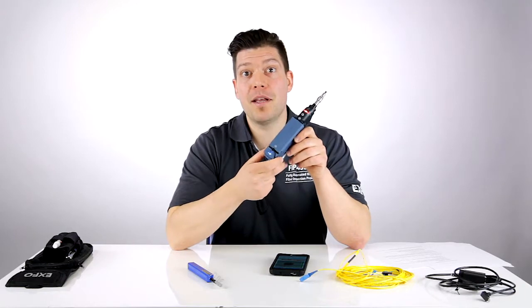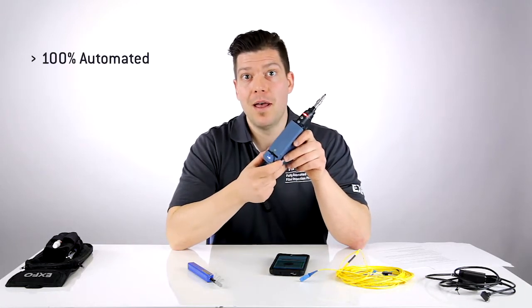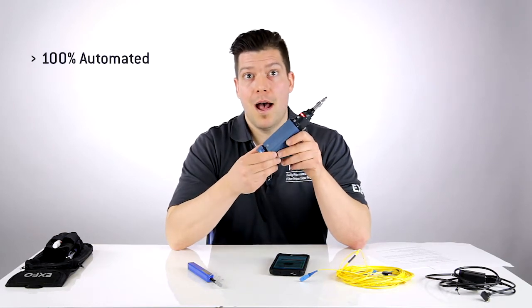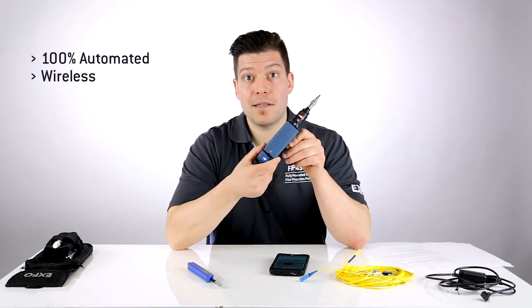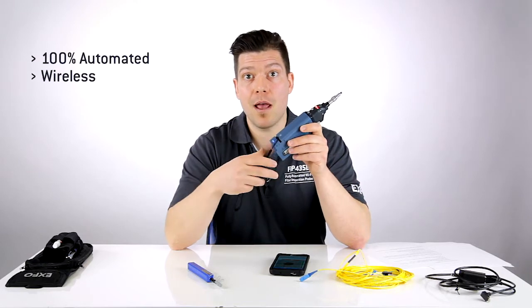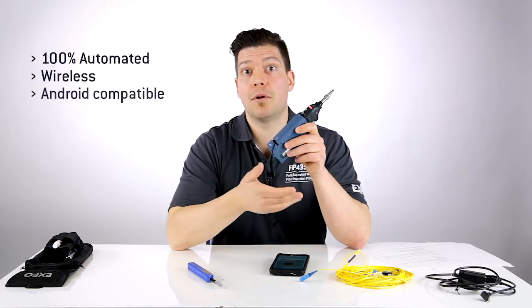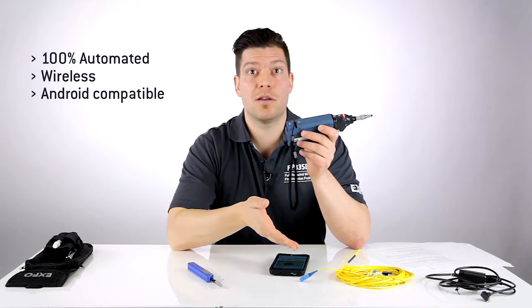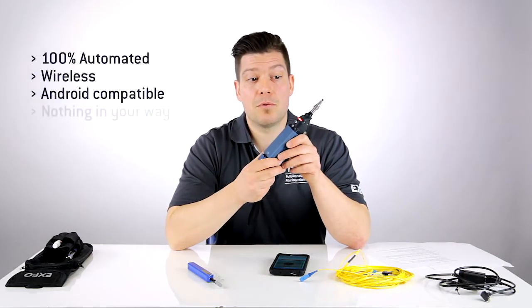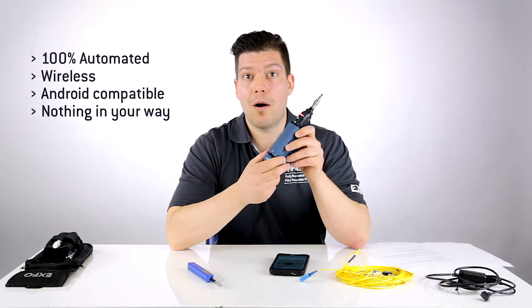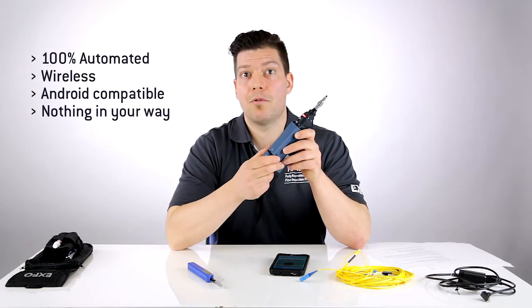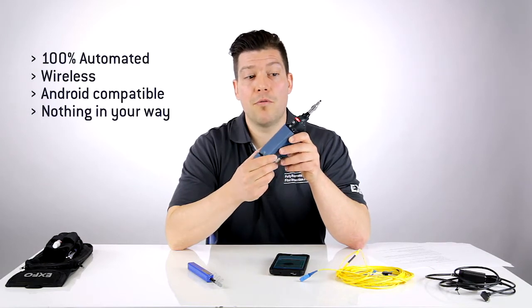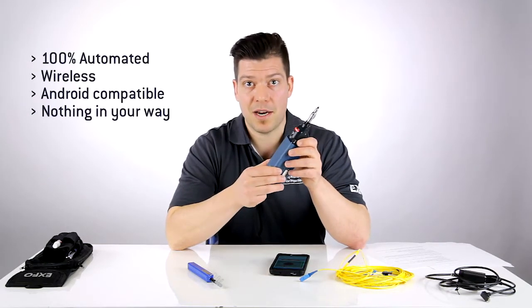As you can see, this fiber inspection tool is really 100% automated, meaning that anyone can actually use it without having to follow any training. It's completely wireless, meaning that you have nothing in your way. And it connects to an Android device, meaning that it's accessible to anyone that owns such a smart device. Finally, there's absolutely no restrictions. No power pack, no extra adapter, and anything that gets in your way. That's really all the freedom you can have for doing your fiber inspection.